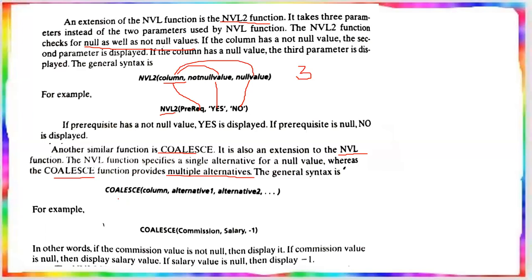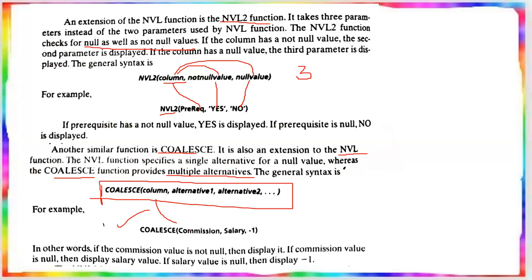The syntax of COALESCE is: COALESCE(column, alternative1, alternative2, ...) up to all alternatives. For example: COALESCE(commission, salary, -1). This means: check commission first, then salary, then -1 as the last fallback.